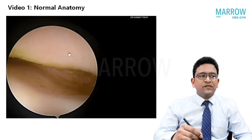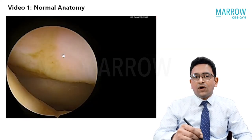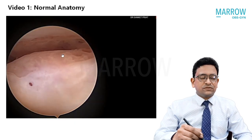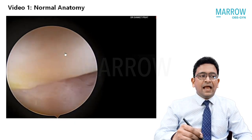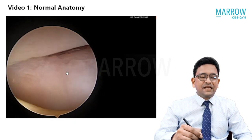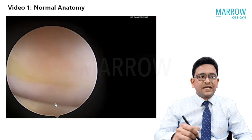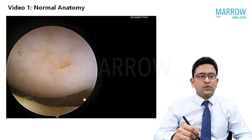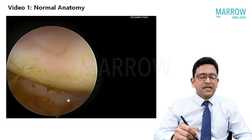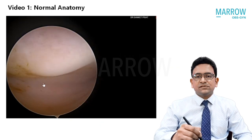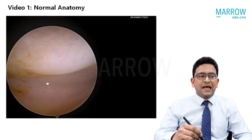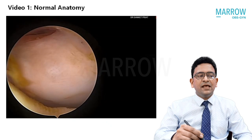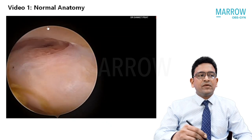Let us take a look at a video of the normal anatomy. This is the hysteroscopy which is being performed. As we go inside, first we are able to delineate the posterior vaginal fornix, and as the hysteroscope moves back and then gradually forward into the uterine cavity, we proceed further.